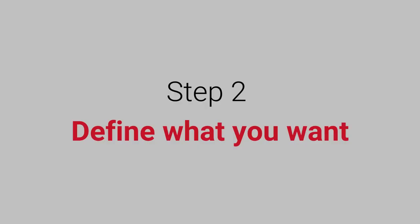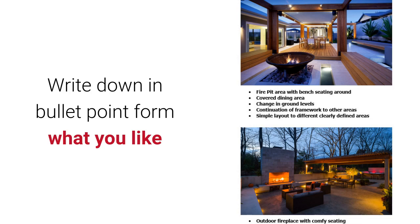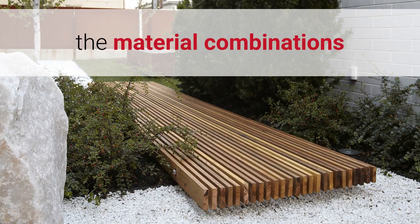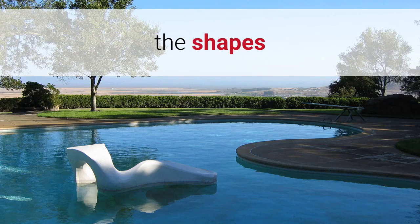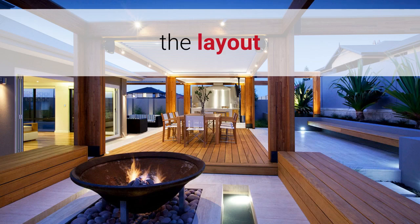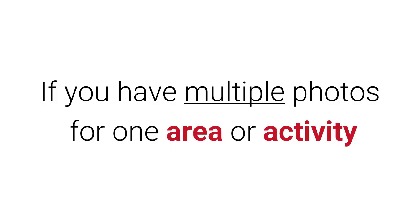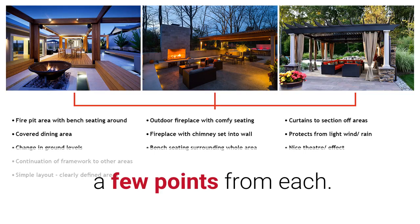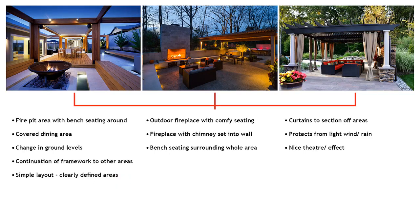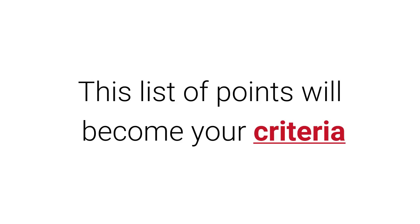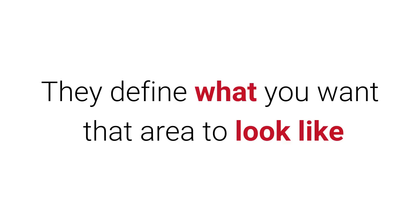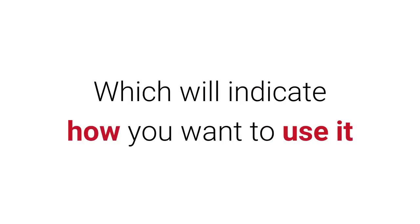Step 2: Define what you want. Write down, in bullet point form, what you like about each image. It can be the material combinations, the colours, the shapes, maybe the layout, or perhaps the overall theatre or effects that the garden creates. If you have multiple photos for one area or activity, such as entertaining, you can take a few points from each. And if you have competing ideas for a particular area or activity, try them both out. This list of points will become your criteria. They define what you want that area to look like, which will in turn indicate how you want to use the area.